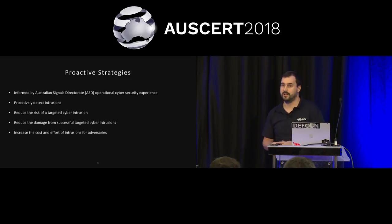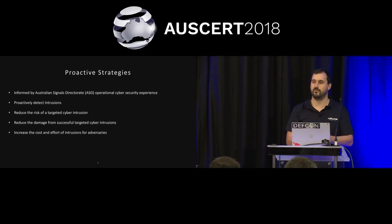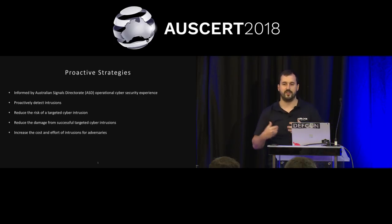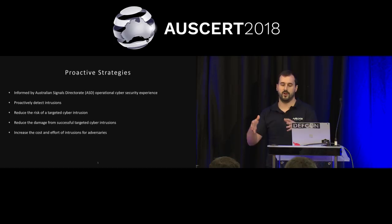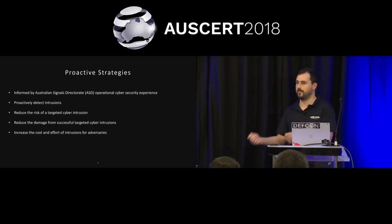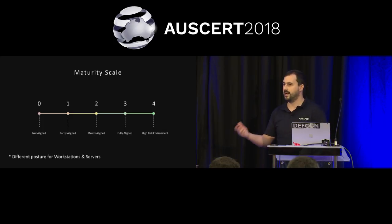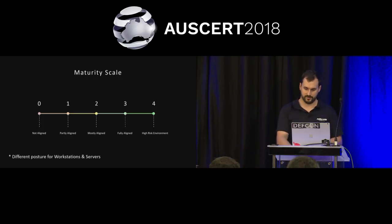The Essential 8 are proactive security strategies informed by ASD's operational experience in the field. They're designed to proactively detect intrusions, reduce the risk of an intrusion, and reduce the damage if an intrusion does occur. So they reduce time to detection. One that people don't often talk about is increasing the cost of intrusion for the bad guys — your adversaries run a business too. If you make it cost-prohibitive for them to attack you, they're going to go elsewhere.